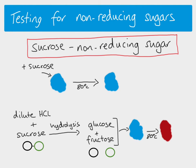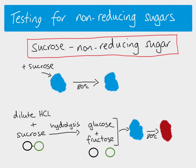To test for non-reducing sugars there are two steps. First, you must show a negative Benedict's test, which confirms there are no reducing sugars to start with. Then you add dilute hydrochloric acid to hydrolyse the sucrose into monosaccharides, and you carry out the Benedict's test again. If you get a positive result, you know that a non-reducing sugar was present — and that's how you do it.